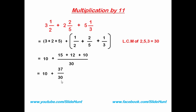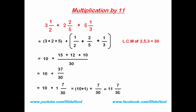You can see that 37 by 30 is an improper fraction. We need to convert it to a proper fraction, and we get 1 and 7/30. Now add this whole number with 10, so we get 11 and 7/30. This is the answer to this problem. I think you understand.